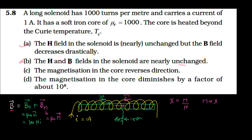Option C says: the magnetization in the core reverses its direction. That is not possible here. Reversal would only occur if the material became diamagnetic — a diamagnetic material's BM is opposite to B₀. But here the material went from ferromagnetic to paramagnetic. As a paramagnet, the field weakens but stays in the same direction as B₀. So the direction of magnetization does not change. Option C is wrong.